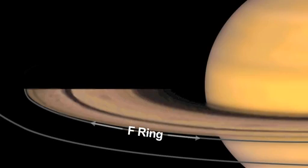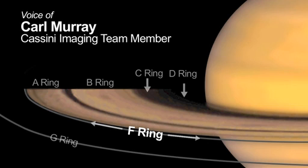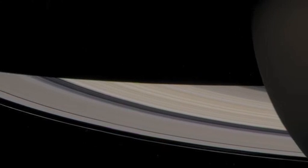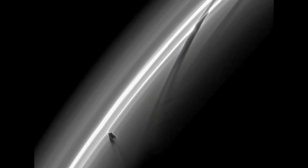I think the F-ring is Saturn's weirdest ring. We have a new analysis of images obtained by Cassini that show the F-ring is actually even more dynamic than we thought.